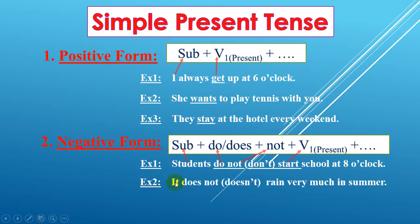Example number two: it does not, or doesn't, rain very much in summer. Subject is 'it', and we use 'does' — do or does depending on the subject. 'It' is third person singular, so we use 'does'. Does not — 'not' to show the negative — and 'rain' is verb one.